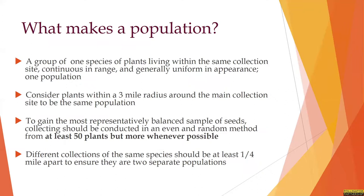So what makes a population? For our program, we consider a population to be a group of one species of plants living within the same collection site that are continuous in range and generally uniform in appearance. Bees can travel up to three miles, and monarchs and some of our other large lepidoptera can travel even further, meaning pollen is being exchanged within a three mile radius of your collection site. So if you need more seeds and you have the permission, you can look outside of your centralized collection location anywhere within that three mile radius and combine those seeds with your main collection.